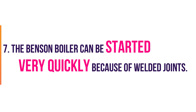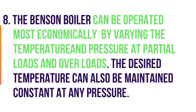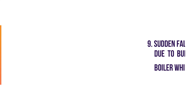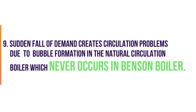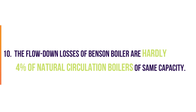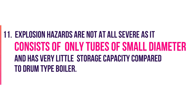The Benson boiler can be started very quickly because of welded joints and the absence of a drum. It can be operated most economically by varying temperature and pressure at partial loads and overloads, and the desired temperature can be maintained constant at any pressure. Sudden fall in demand creates circulation problems due to bubble formation in natural circulation boilers, which never occurs in the Benson boiler. Flow losses in the Benson boiler are only about 4% of those in natural circulation boilers of the same capacity.